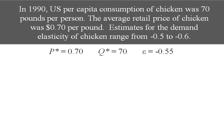So we've got P star of 70 cents, Q star of 70 pounds, and elasticity—I'm going to call it 0.55. I'm splitting the difference here. If I have a range of estimates, maybe I'll just take the average of them.